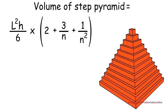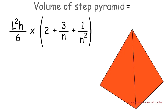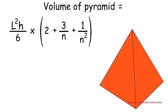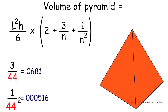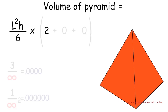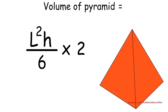Now let's look back at our step pyramid and increase the number of slices to infinitely many. Therefore the volume of the step pyramid becomes equal to the volume of the square pyramid. In terms of our formula, increasing the number of slices means increasing n toward infinity. As n increases, the terms containing n get smaller and smaller, and as we approach infinity they become equal to 0. So 3/n + 1/n² becomes 0 + 0, and we are left with l²h over 6 times 2, which simplifies to l²h over 3.